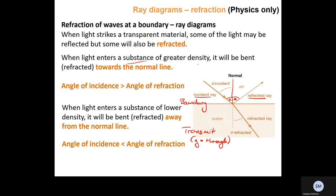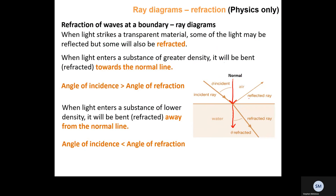When light enters a substance of greater density it will be bent, or refracted, towards the normal line. The normal line is the line at 90 degrees to the boundary. If a ray shines at the boundary at 90 degrees it will just travel straight through — no reflection and no refraction. The normal line represents the direction light would travel if it just went straight through without bending.